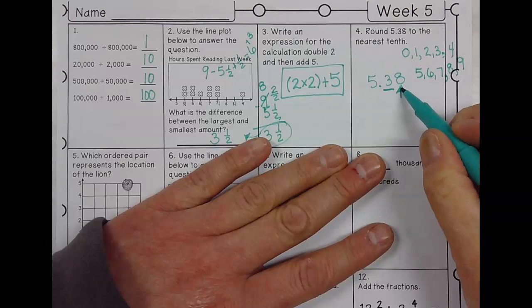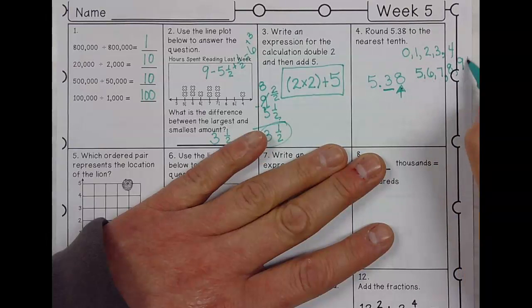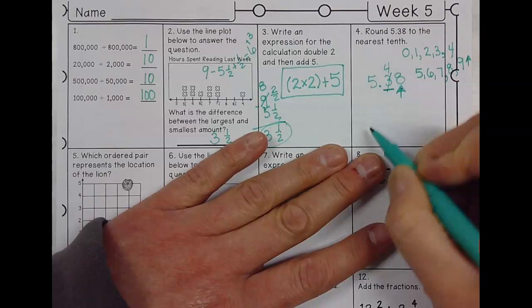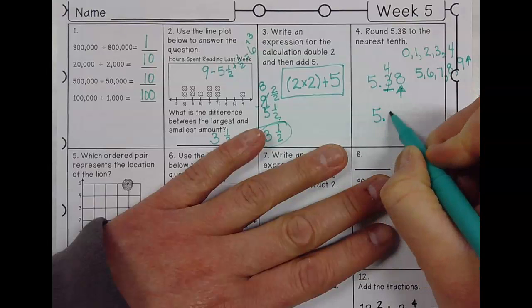So because it's here, it's going to bump up, bump the three up to a four. So our answer is going to be five point four.